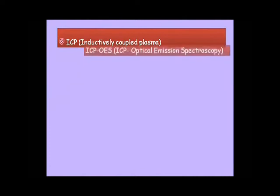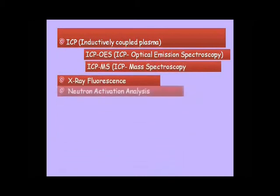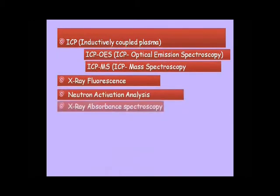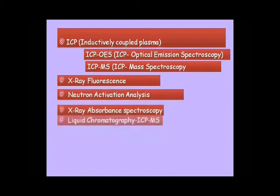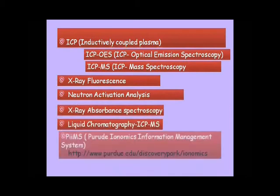Methods to study Ionomics include ICP inductively coupled plasma ICP-OES, ICP-MS, X-ray fluorescence, Neutron activation analysis, X-ray absorbance spectroscopy, liquid chromatography, and PI-IMS.